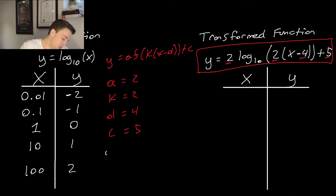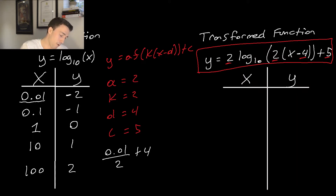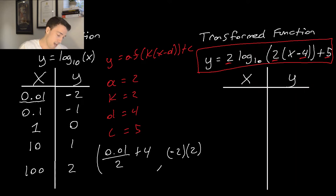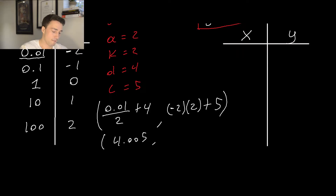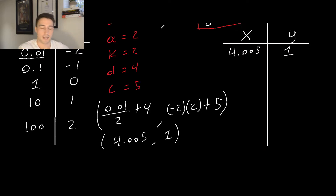For the first parent point (0.01, −2): the new x is 0.01 divided by 2 plus 4, giving 4.005. The new y is −2 times a (which is 2) plus c (which is 5), giving 1. So the transformed point is (4.005, 1). For the next parent point (0.1, −1): x becomes 0.1/2 + 4 = 4.05, and y becomes −1 × 2 + 5 = 3. So we get (4.05, 3).